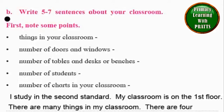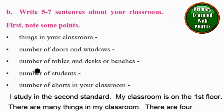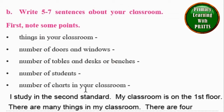Our next question is Question B: Write five to seven sentences about your classroom. First, note some points. They have given us five points which we can make sentences out of: things in your classroom, number of doors and windows, number of tables and desks or benches, number of students, and number of charts in your classroom. So we already have five sentences ready. We can start with the intro of which standard you are and where your classroom is, and end with 'I love my classroom very much.' So first sentence intro, then these five points, and lastly 'I love my classroom very much' — and you have a seven sentence composition ready.